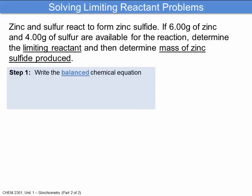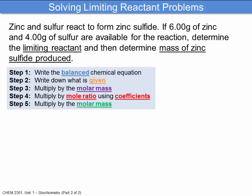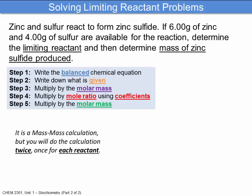The first step, as usual for stoichiometry questions, is to write down a balanced chemical equation. Then we'll want to write down what is given, multiply by the molar mass to go from mass to moles, multiply the mole ratio using coefficients, and multiply by the molar mass again. It's a mass-mass calculation. We know the mass of zinc and the mass of sulfur, and we're going to do the calculation twice — once for each reactant.